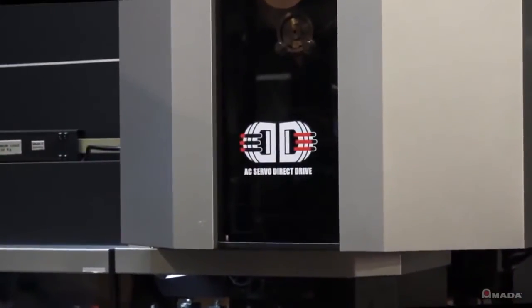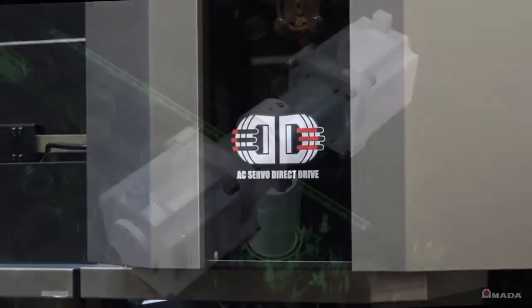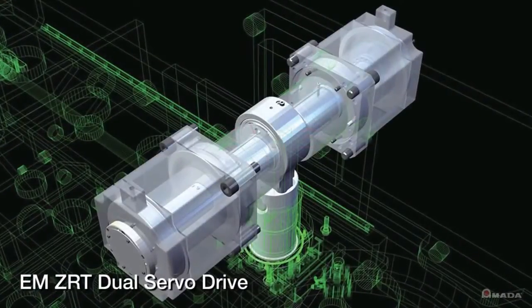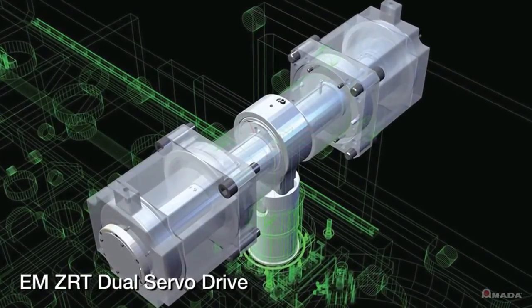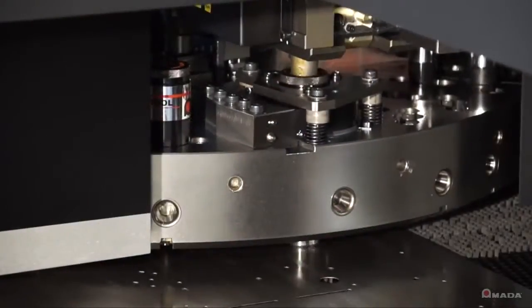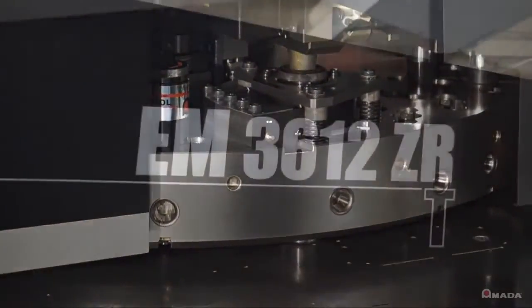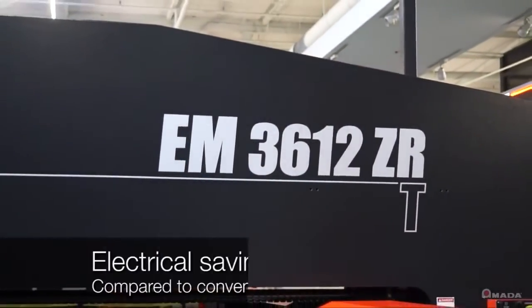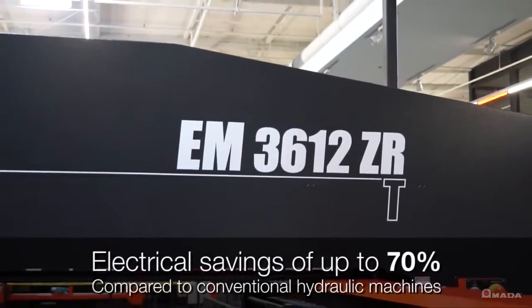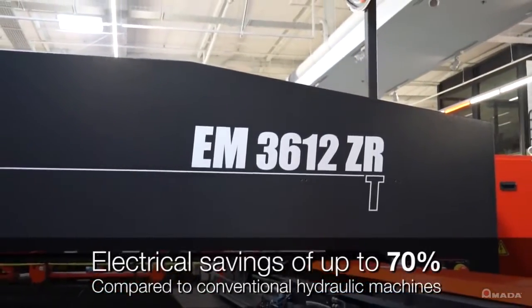The EM-ZRT is driven by dual servo drives that eliminate the need for complex hydraulics and oil cooling chillers. This drive system dramatically reduces maintenance and repair costs, and it also provides electrical savings of up to 70% over conventional hydraulic machines.